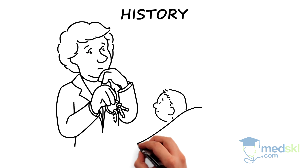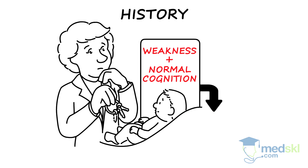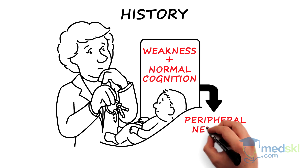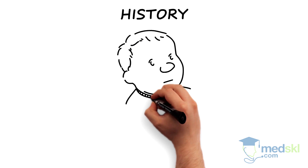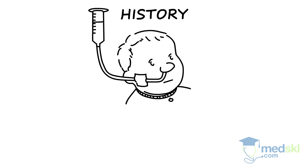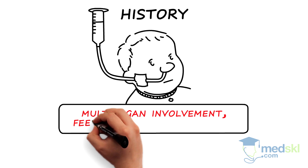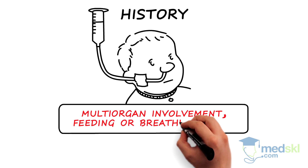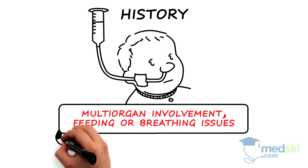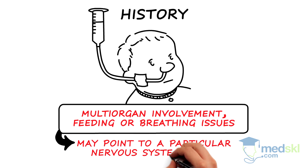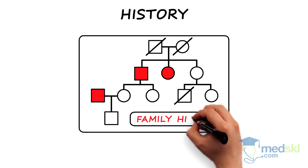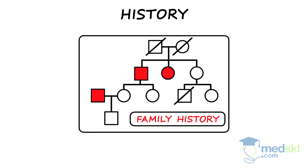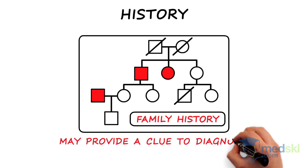Weakness with normal cognition indicates a problem in the peripheral nervous system. Look for associated problems such as multi-organ involvement, feeding or breathing issues that may point to a particular nervous system level and diagnosis. A family history of similar difficulties may provide a clue to diagnosis.